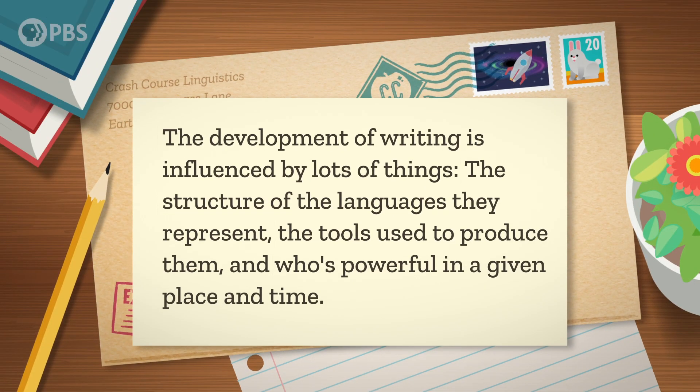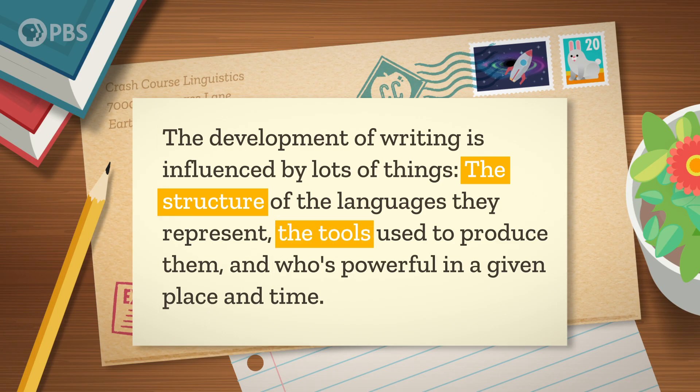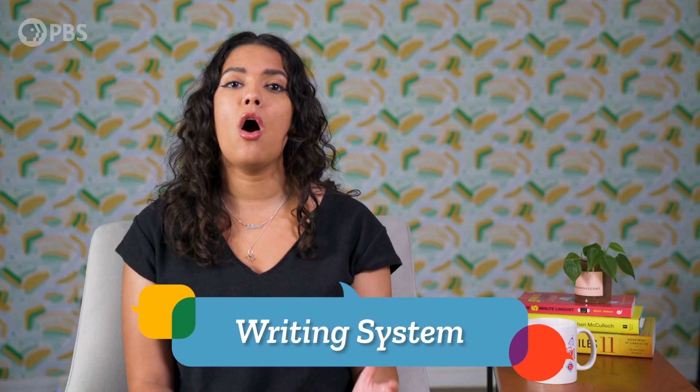Hi, I'm Taylor, and welcome to the last episode of Crash Course Linguistics. All human societies have language, either spoken or signed or both. But writing is a technology that got invented in different ways in different places, so not all languages have a standardized written form. The development of writing is influenced by lots of things: the structure of the languages they represent, the tools used to produce them, and who's powerful in a given place and time. This set of conventions used to represent a language in writing are called a writing system, or an orthography.